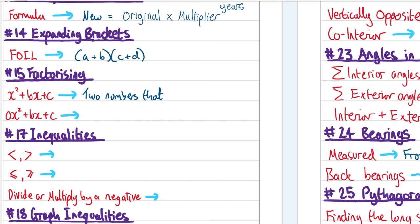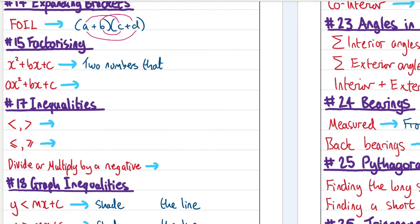Expanding brackets. We might want to use the acronym FOIL — First (multiply the two first terms), Outside (multiply the two outer terms), Inside (multiply the two inner terms), Last (multiply the last term in each bracket). That gives you each term as required.